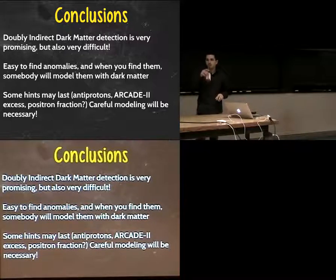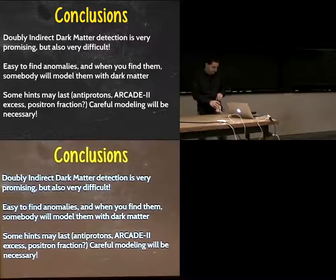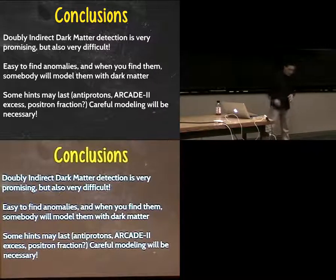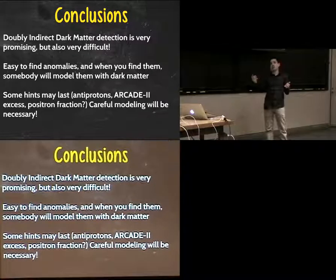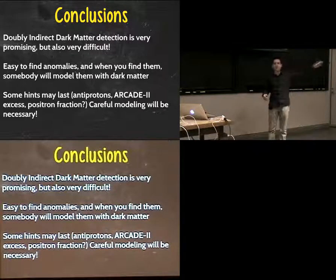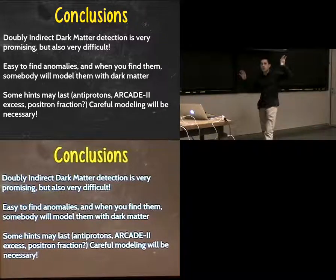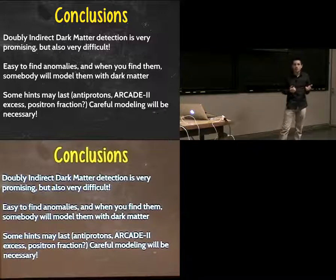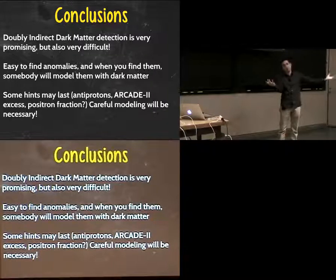Audience question: what is the WIMP miracle? The idea is that we have about six times as much dark matter in the universe as normal matter—six times as much density in dark matter as in protons, which form most of normal matter. Why is that true? If the universe just started and we decided on this much dark matter and this much normal matter...